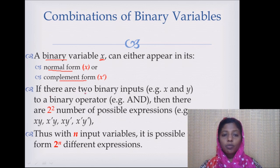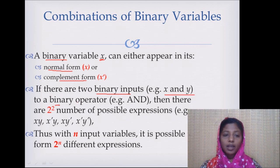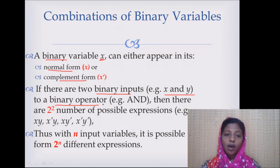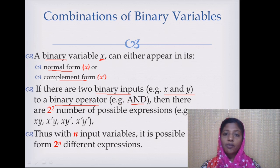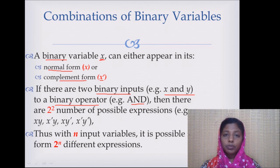If there are two Boolean variables, say x and y, and we apply a binary logical operation over these variables — binary means we have two inputs to the operation — for example, the AND operation requires two inputs. A unary operator has a single operand, such as minus 5 or the complement operation. A binary operator means we have two inputs, for example, the AND operation or the OR operation.